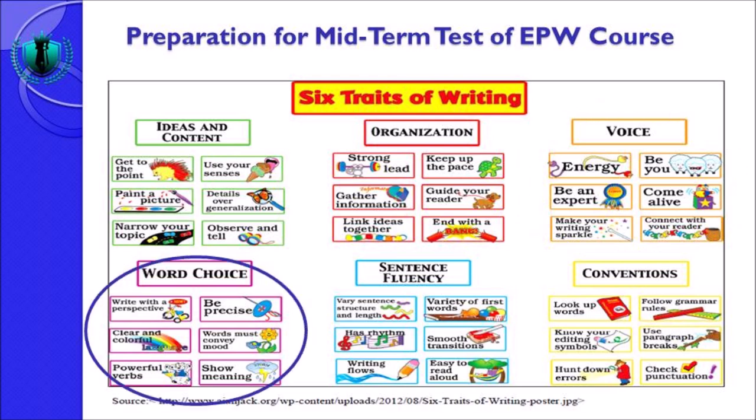Moving on to the next trait of writing: word choice. Word choice berkaitan dengan vocabulary atau kosa kata, dan juga terdapat 6 unsur yang membangun word choice: write with a perspective, be precise, clear and colorful, words must convey mood, powerful verbs, dan show meaning.